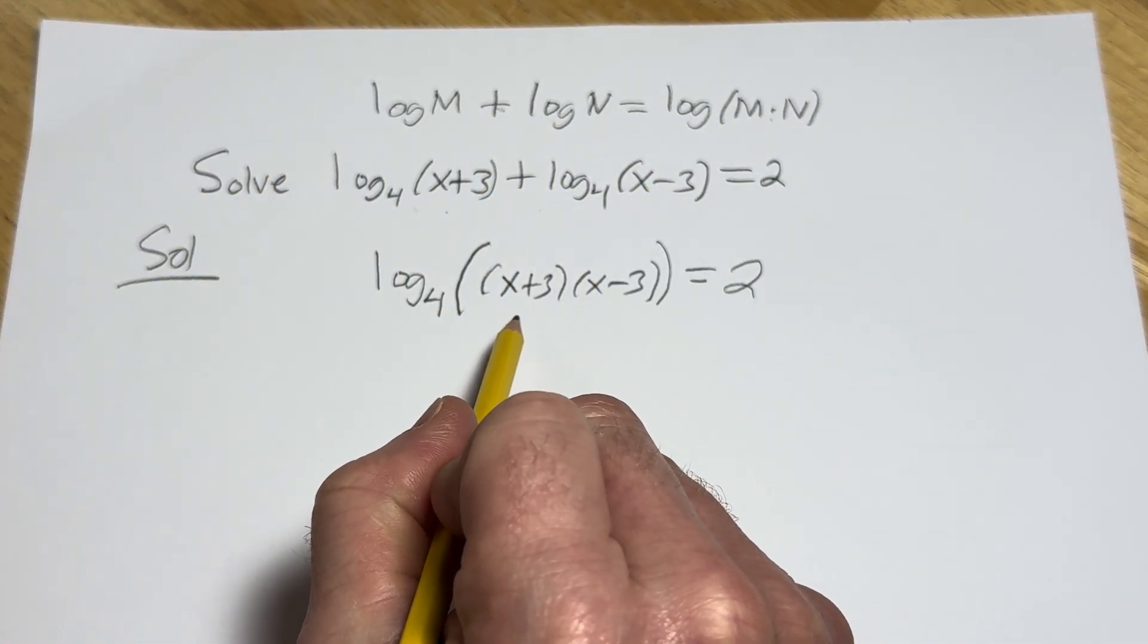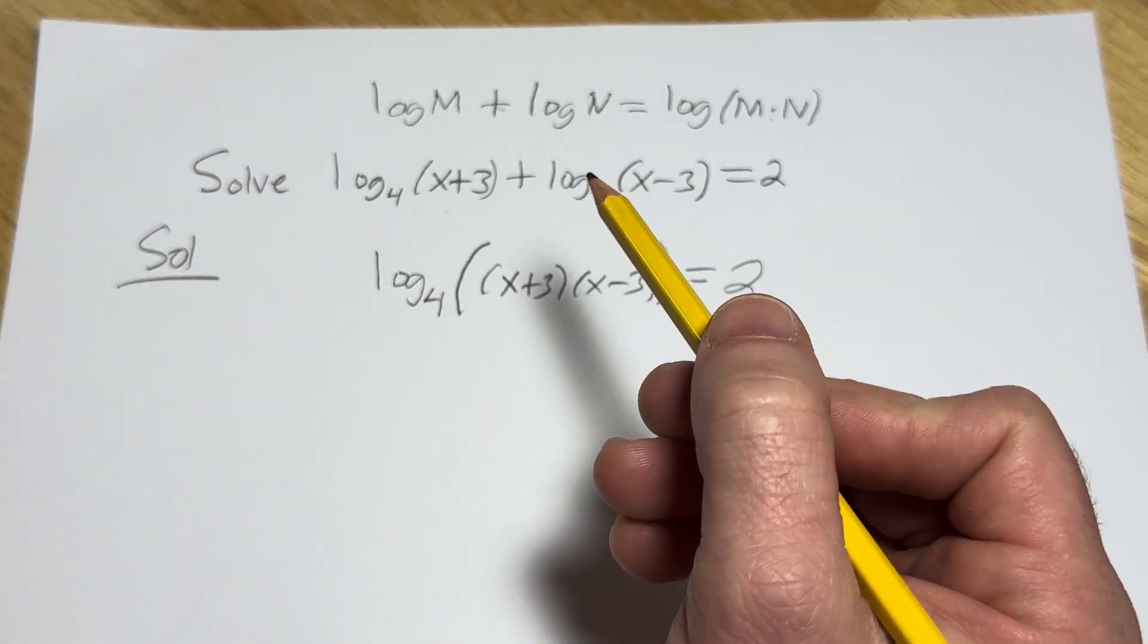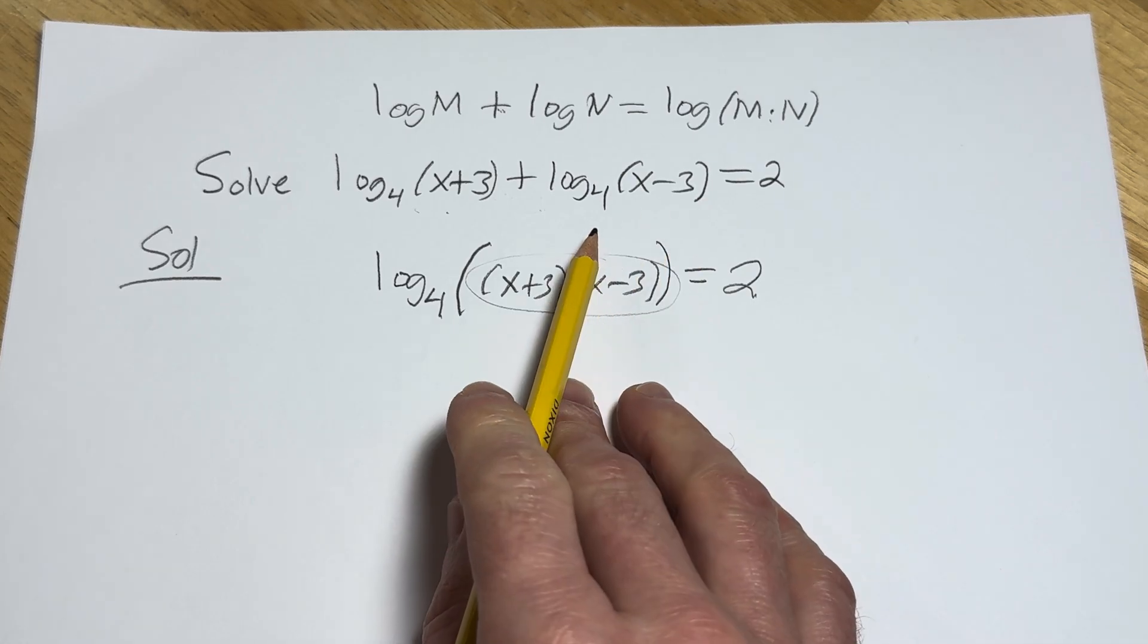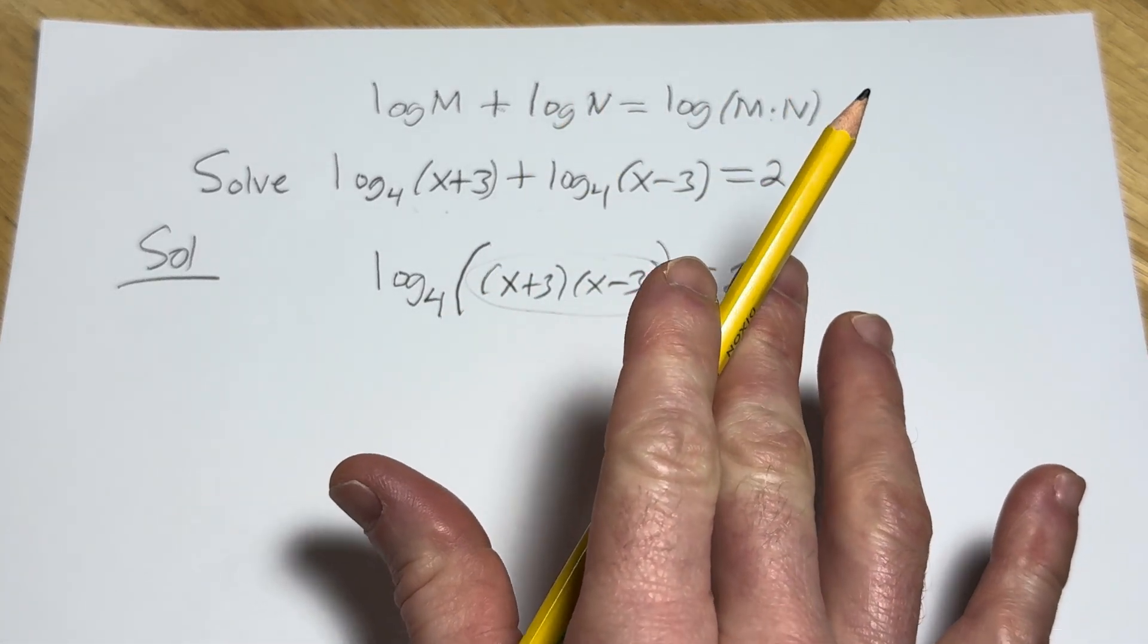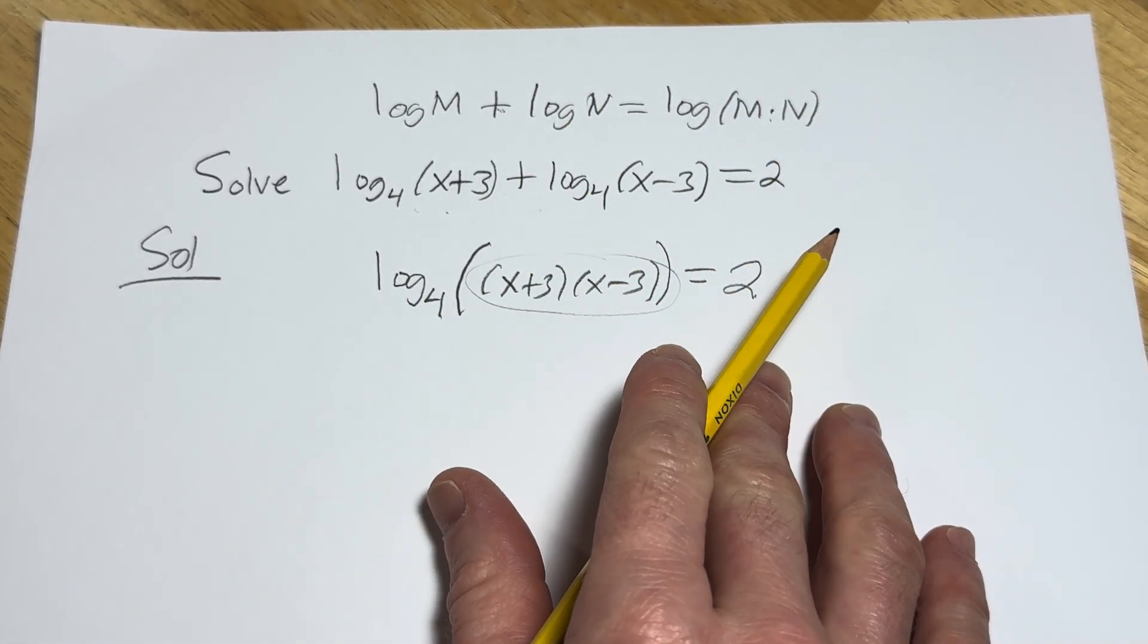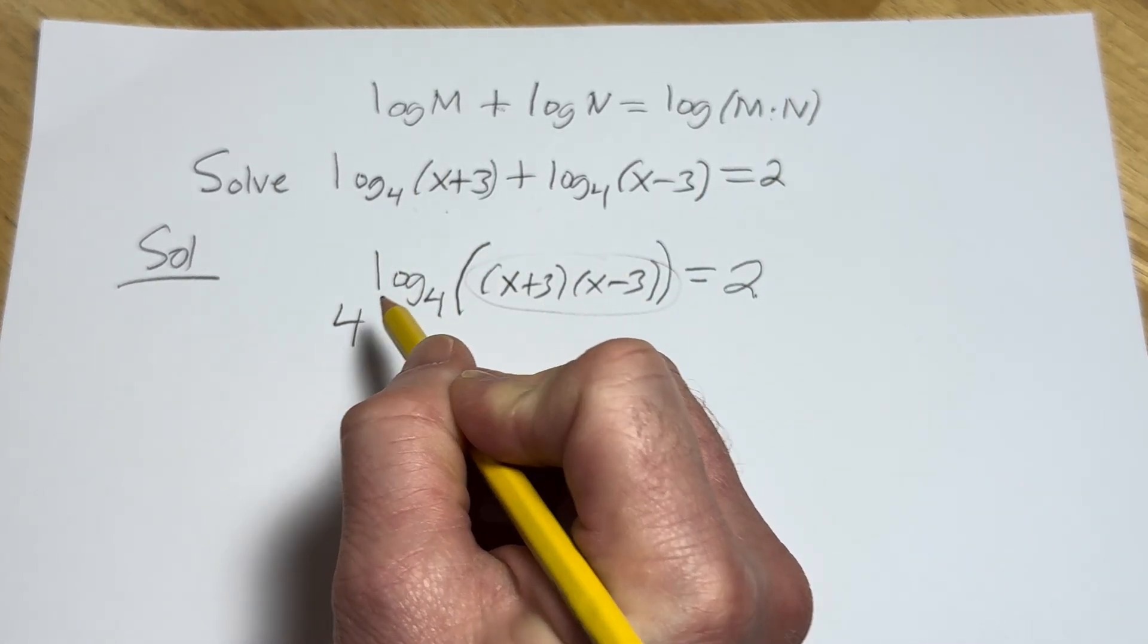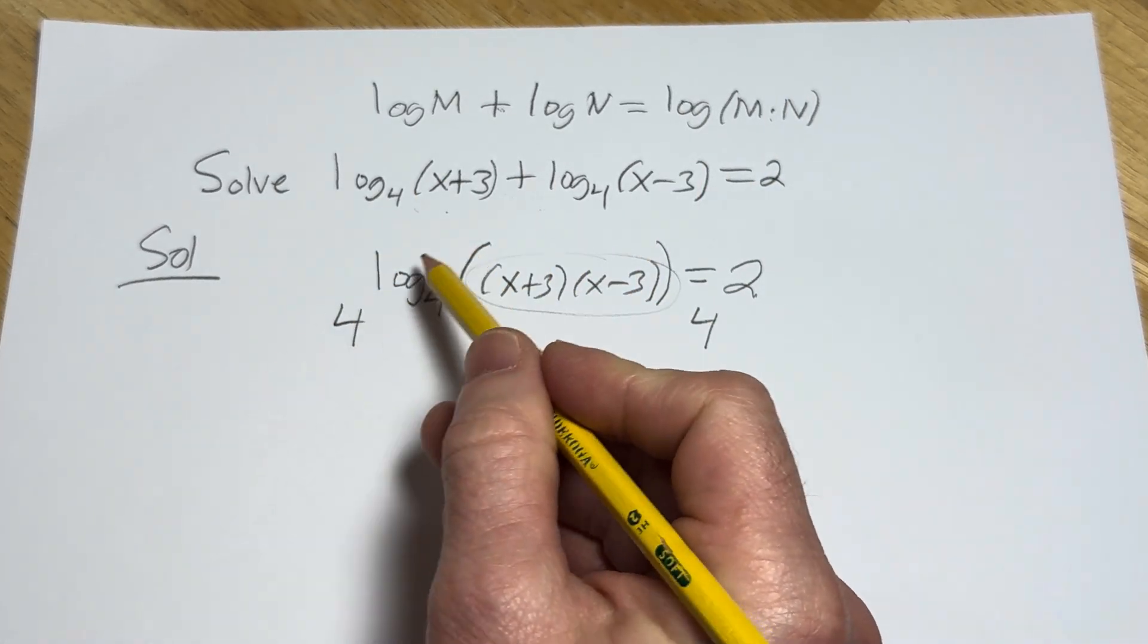So you can write it in exponential form two ways. You can say 4 squared is equal to all of this, or you can exponentiate both sides. I'm going to go ahead and exponentiate both sides because I feel like that's easier for people to understand. So what you do is you put a 4 here, and you put a 4 here, and these basically go away.